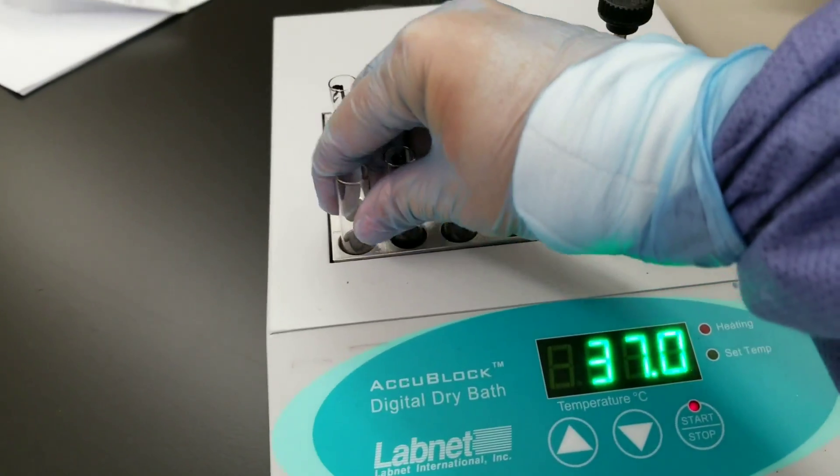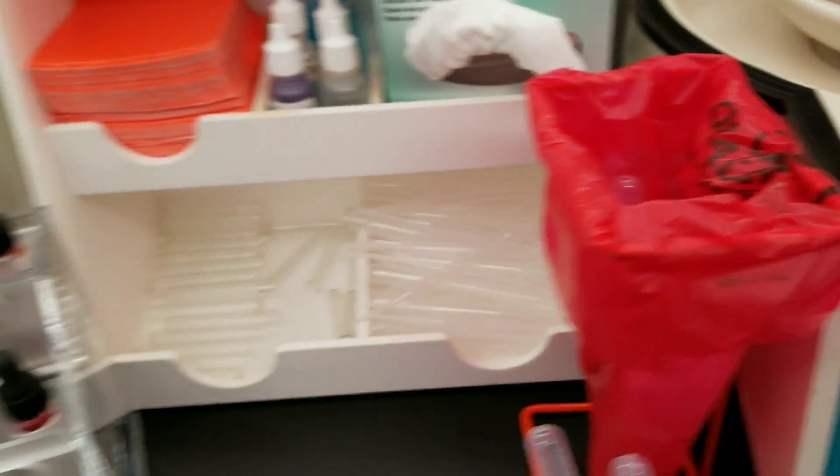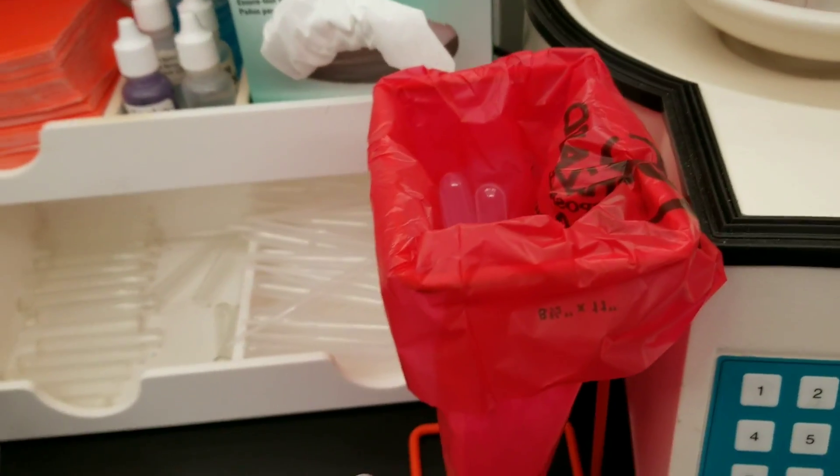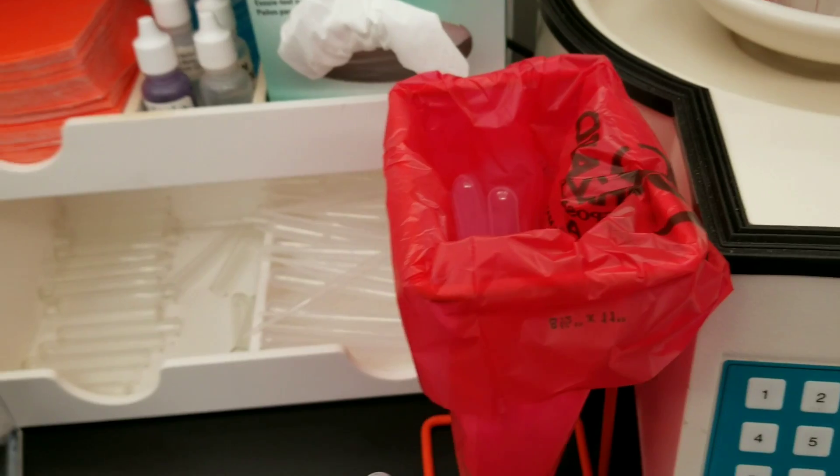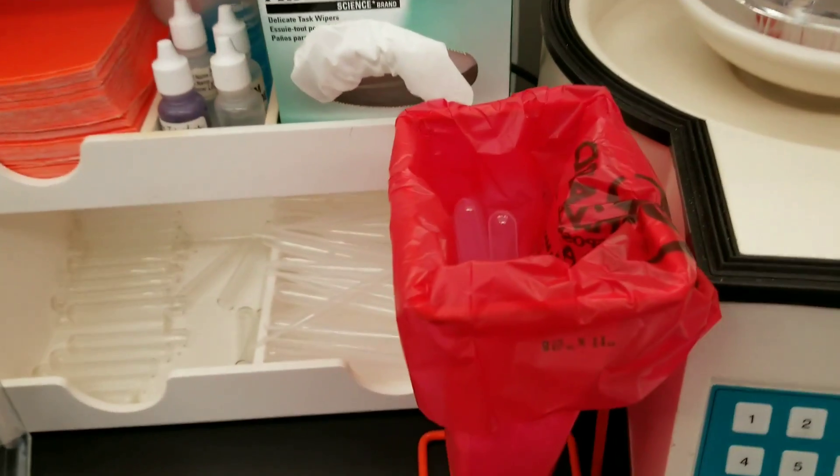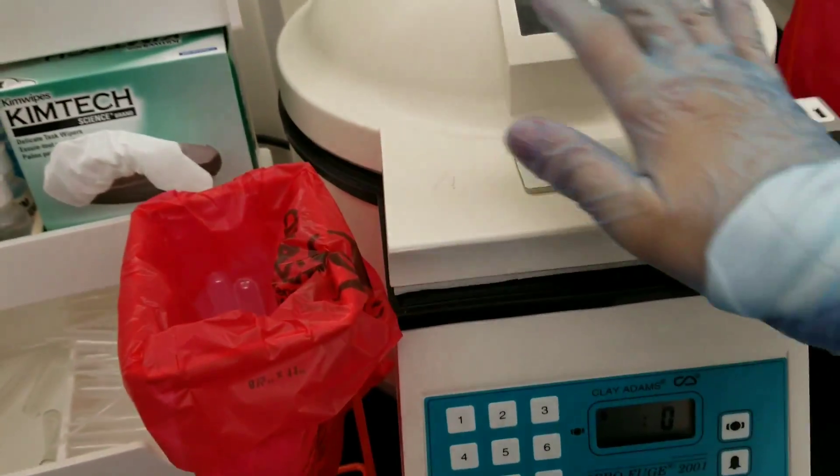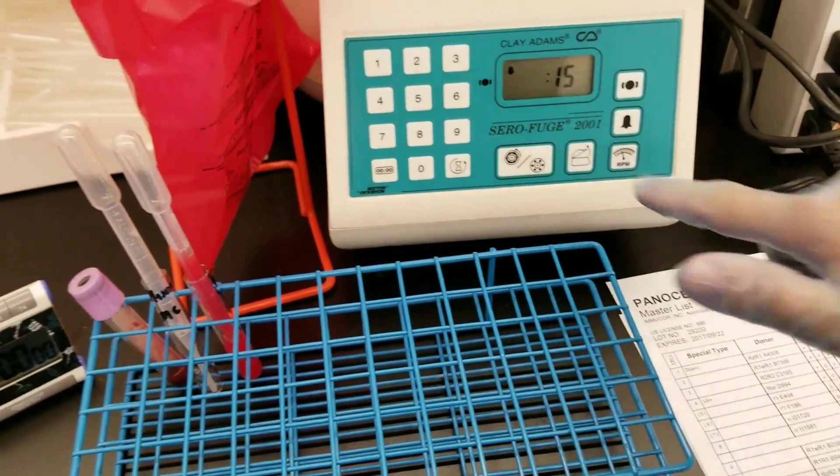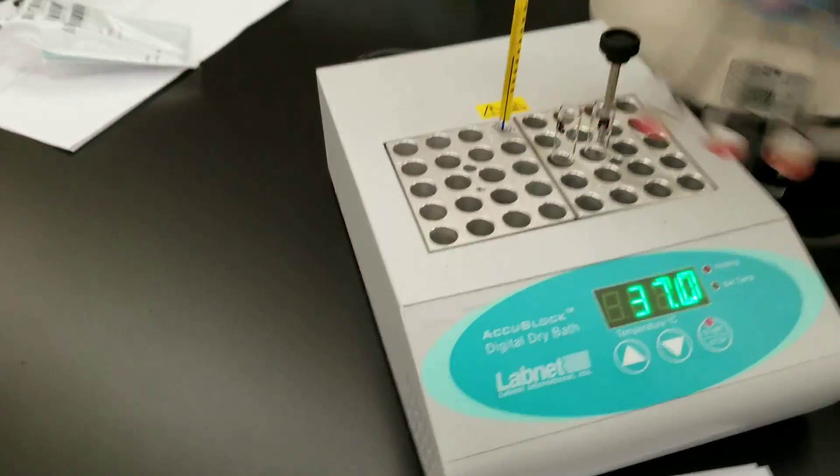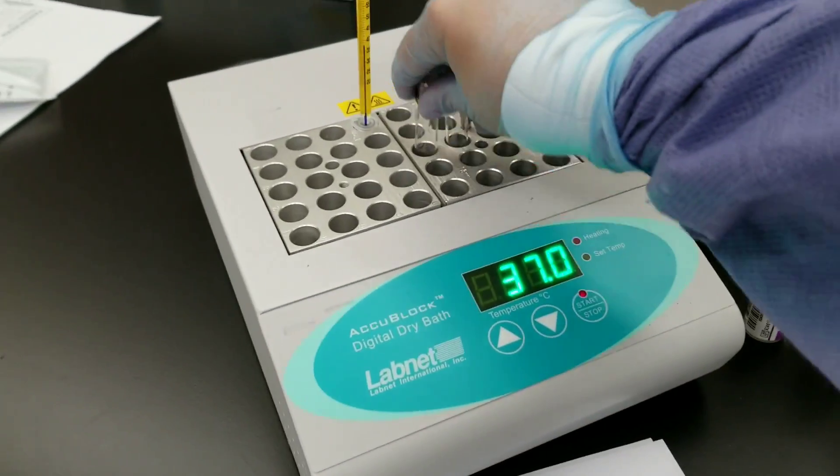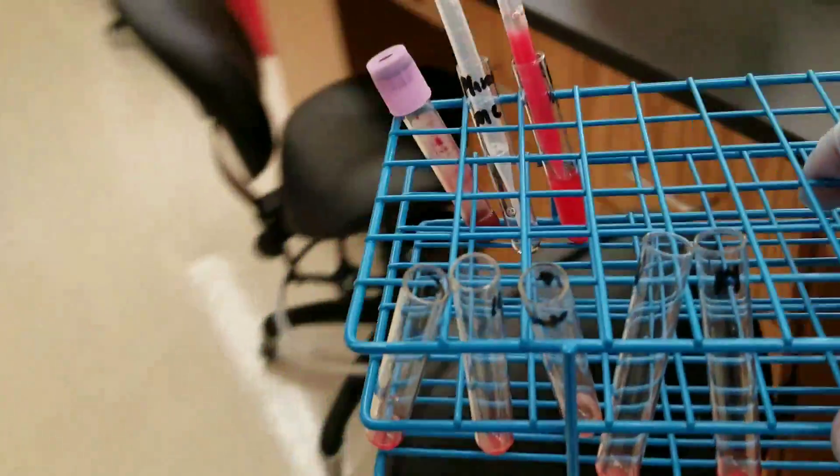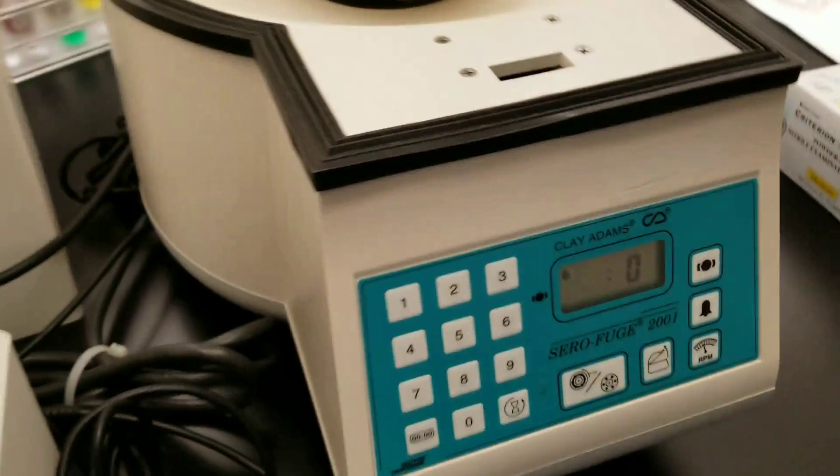We are done with our 37 degrees incubation for our antibody identification panel. I'm putting them now into the centrifuge in order to spin and then read for agglutination. We have already added the two drops of low ionic strength solution in order to get rid of any ion cloud that was present in the reagent red cell preservative solution.